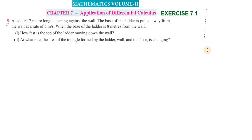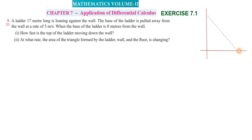Let's set up the diagram. The x-axis represents the floor and the y-axis represents the wall. The ladder is leaning against the wall, with the length of the ladder — the hypotenuse — being 17 meters.